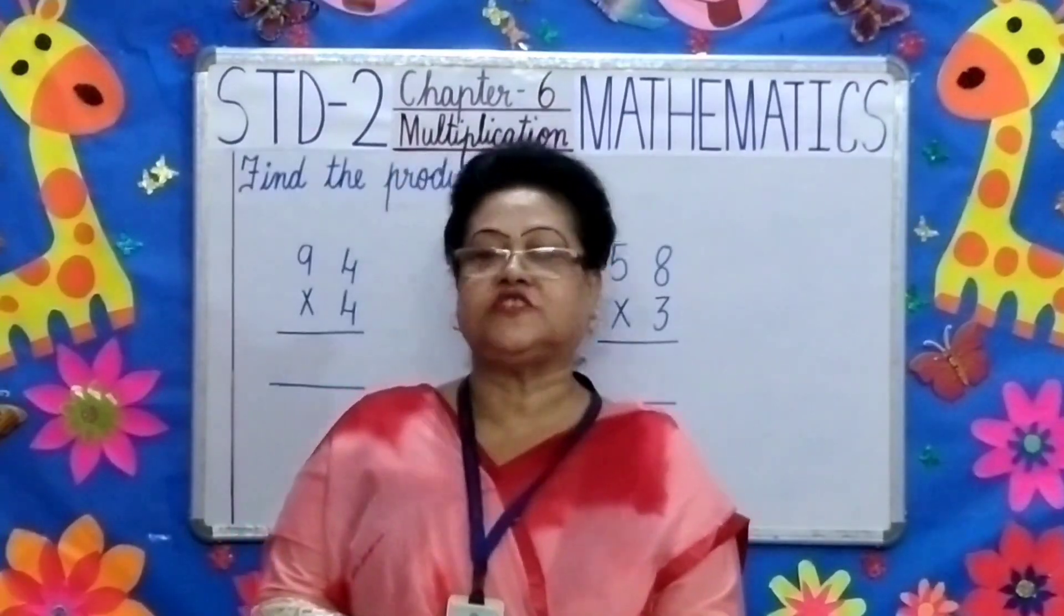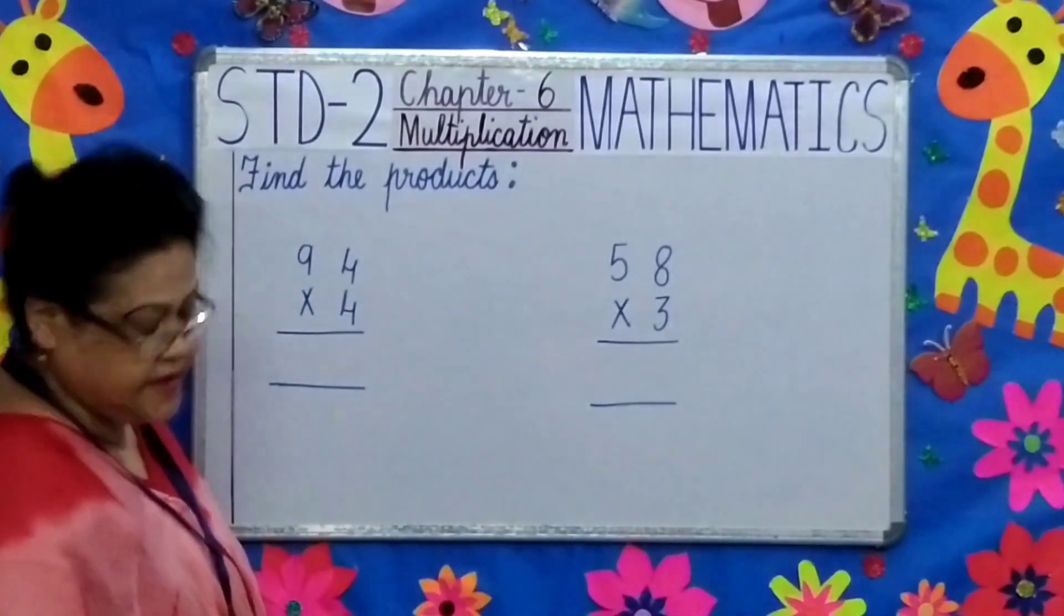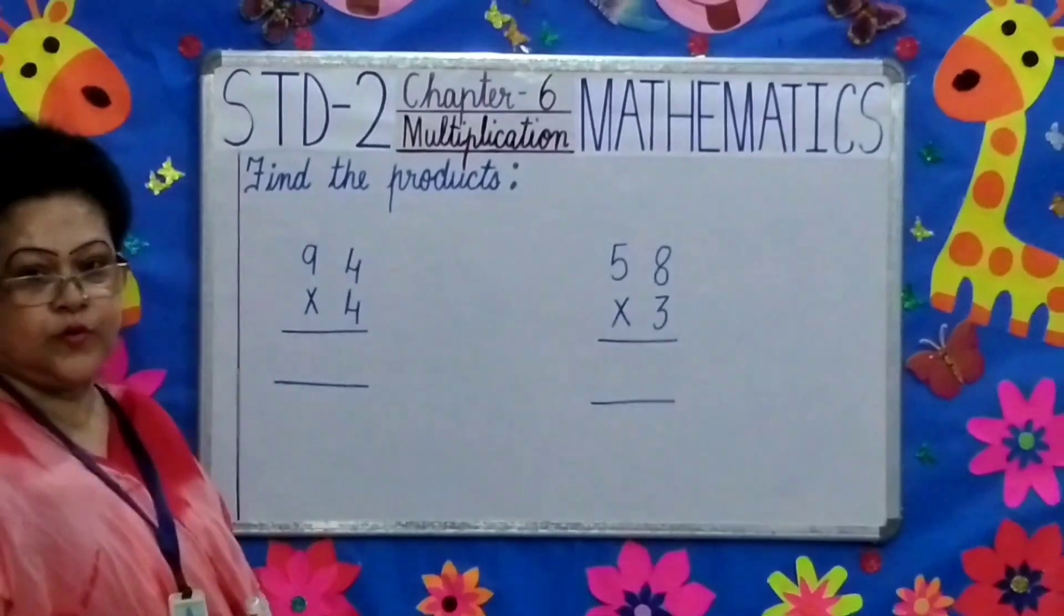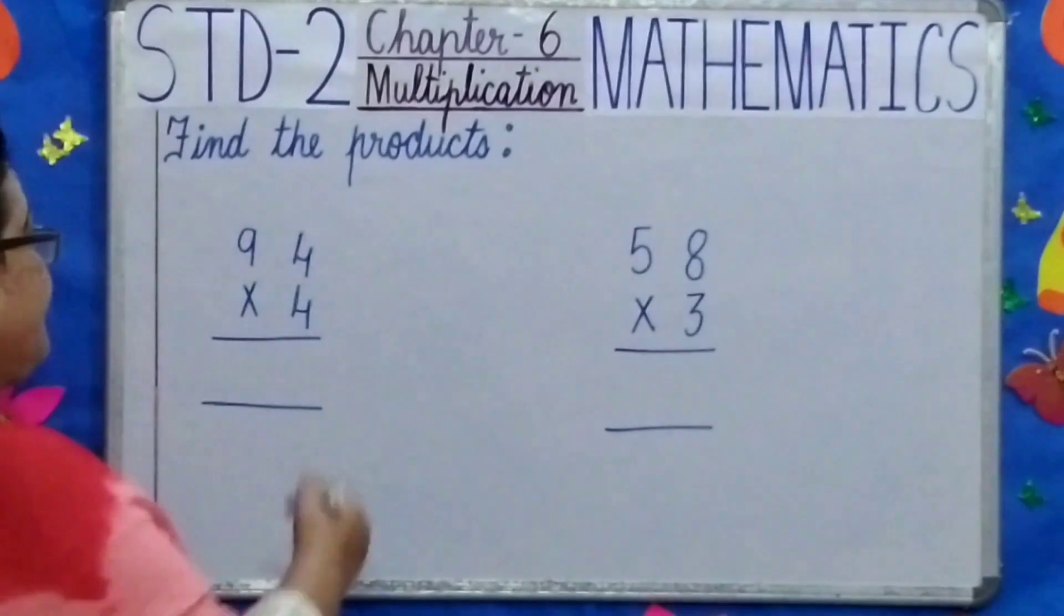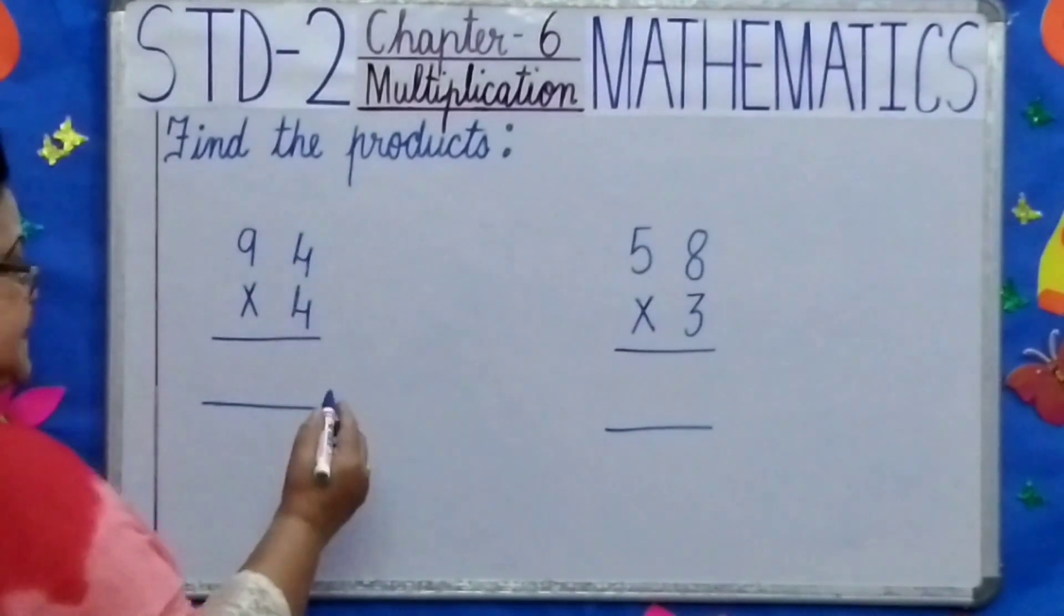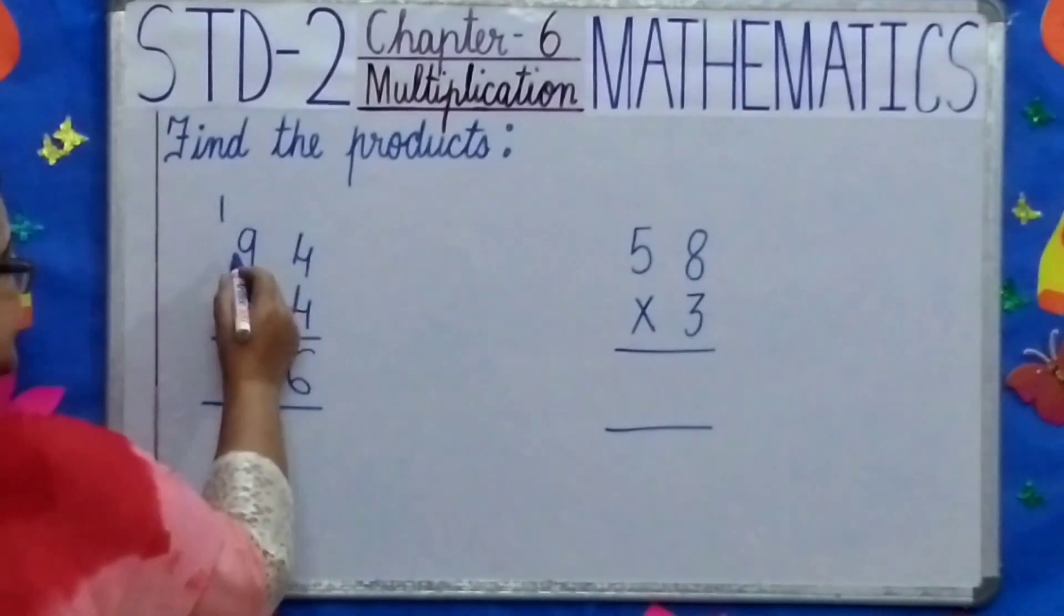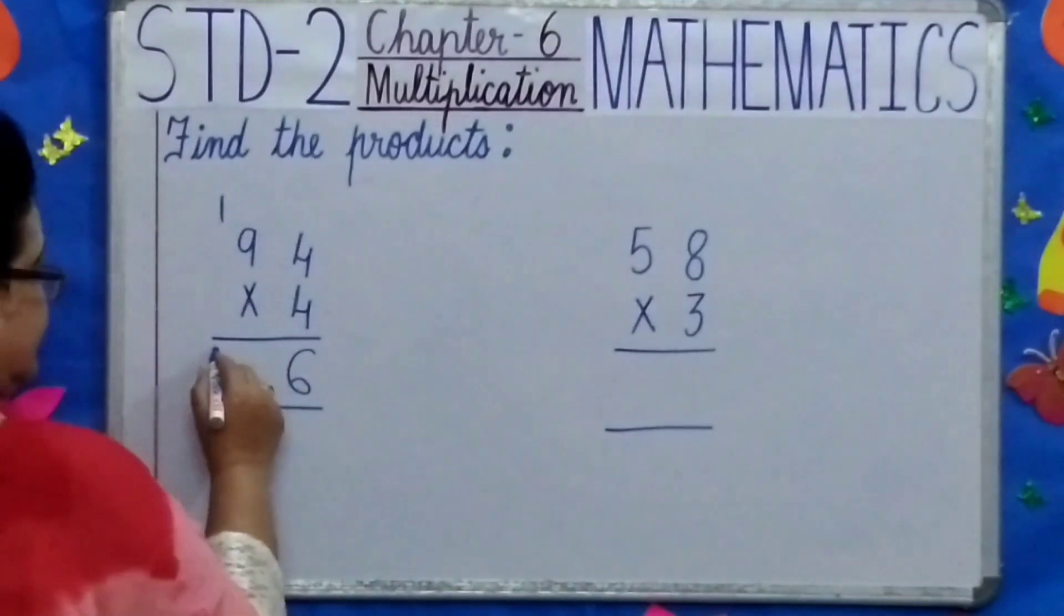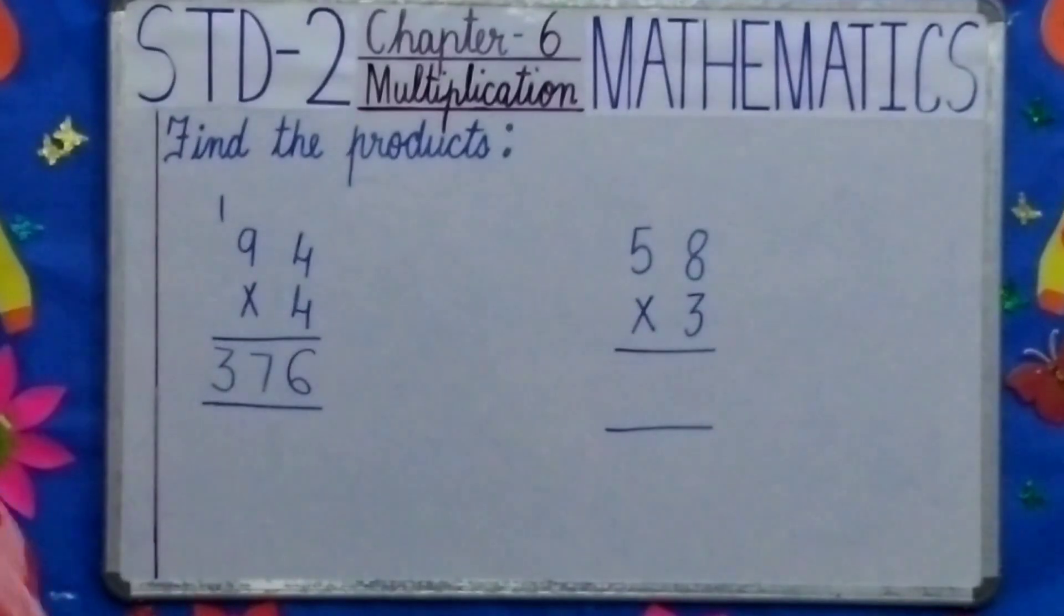Moving on to the next topic. Find the products. Children, there are two sums on the board. First we will do the first one. 94 multiplied by 4. 4 fours are 16. 6 carry 1. 4 nines are 36. Plus 1. 37. What is your answer? 376.